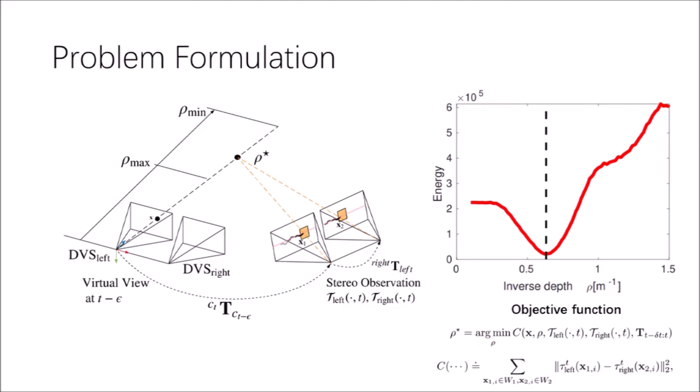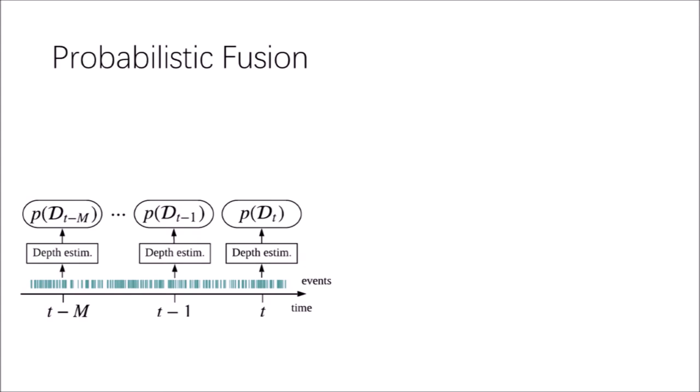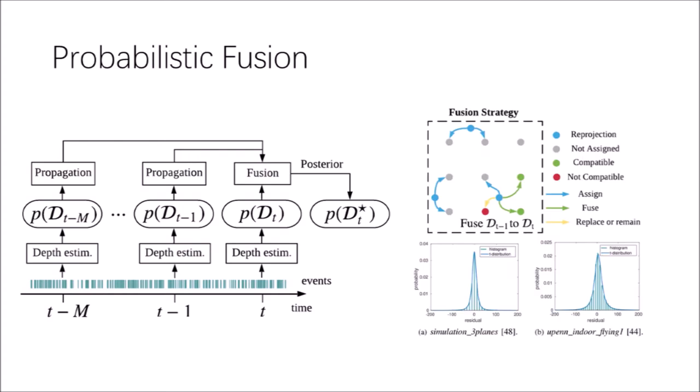Based on established spatial temporal consistency criteria, the inverse depth of the event observed from the virtual view at which it occurred is estimated by optimizing the objective function. To improve the density of the reconstruction while reducing the uncertainty of the estimated depths, we run the mapping method on several pairs of stereo observations over time and fuse the results. To this end, a fusion strategy based on the probabilistic characteristics of inverse depth estimates is developed and incrementally applied as sparse reconstruction results arrive. The resulting inverse depth map incrementally approaches the semi-dense level.